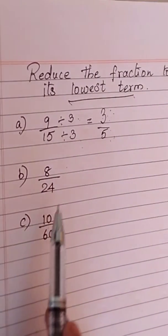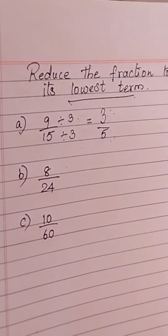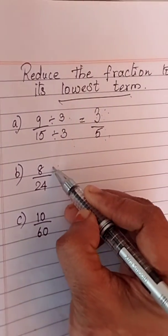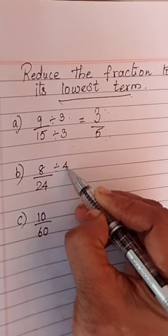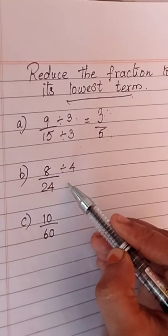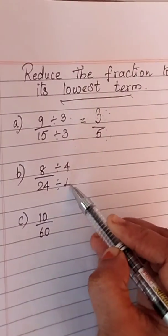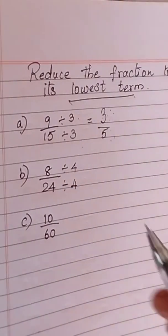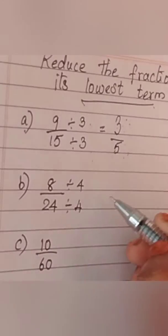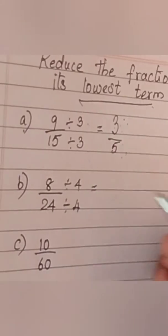Now, our next example is 8 by 24. I will show this in two ways. First, let us divide by 4. 8 divide by 4 and 24 divide by 4. 8 divide by 4 will give you 2.